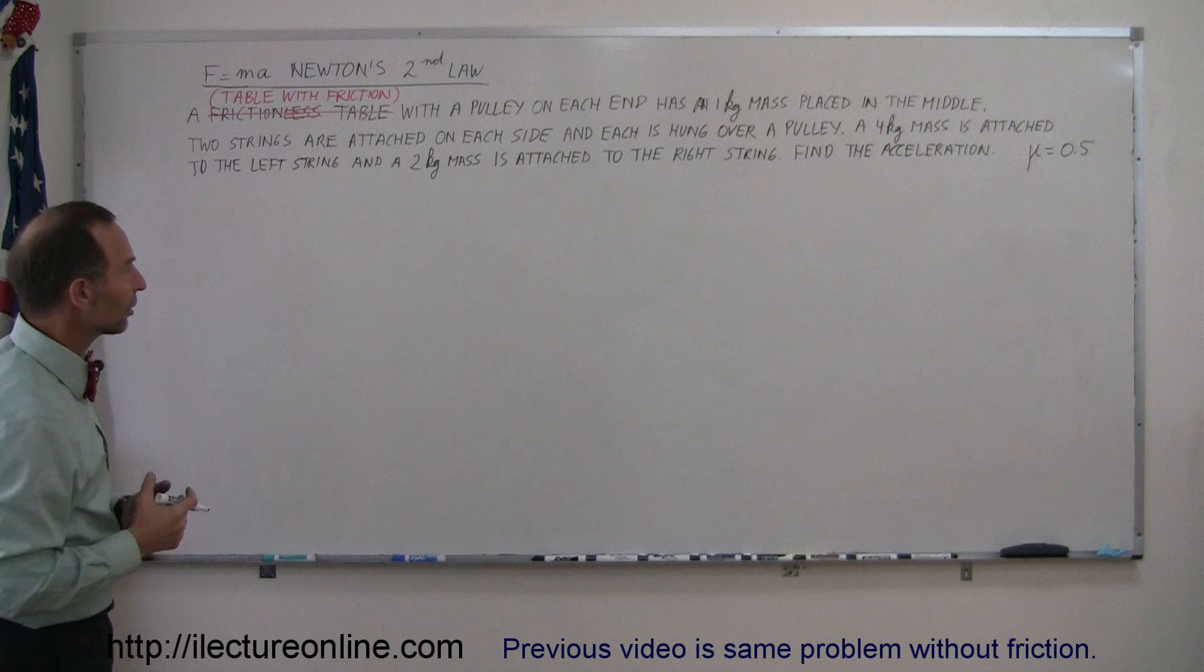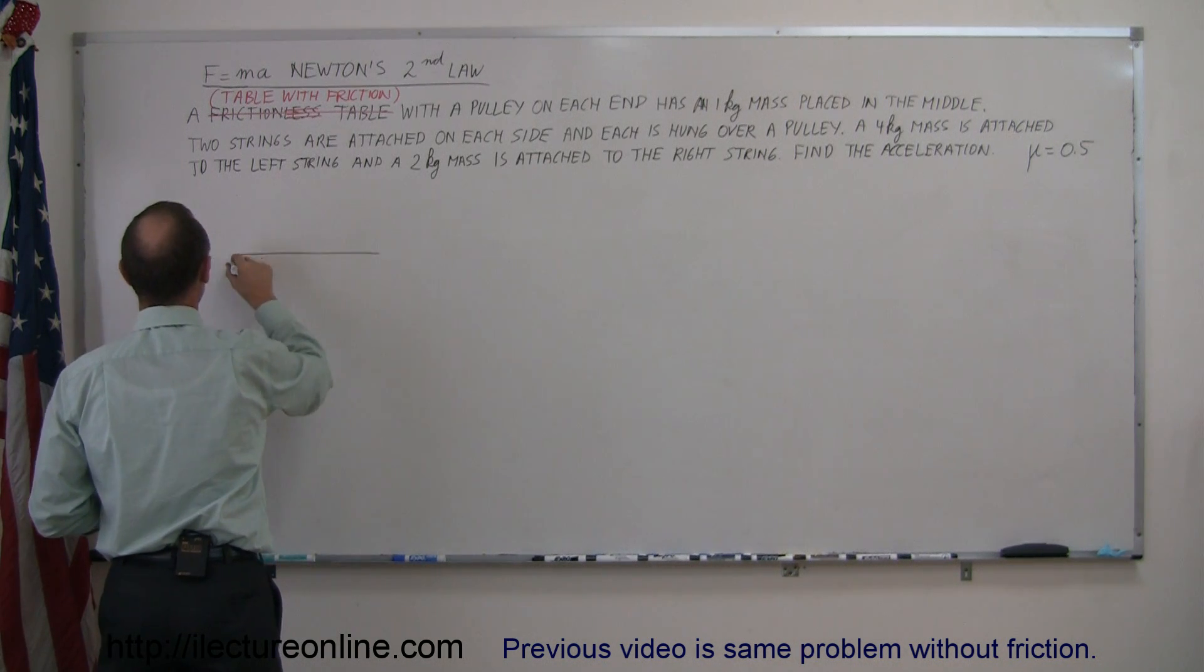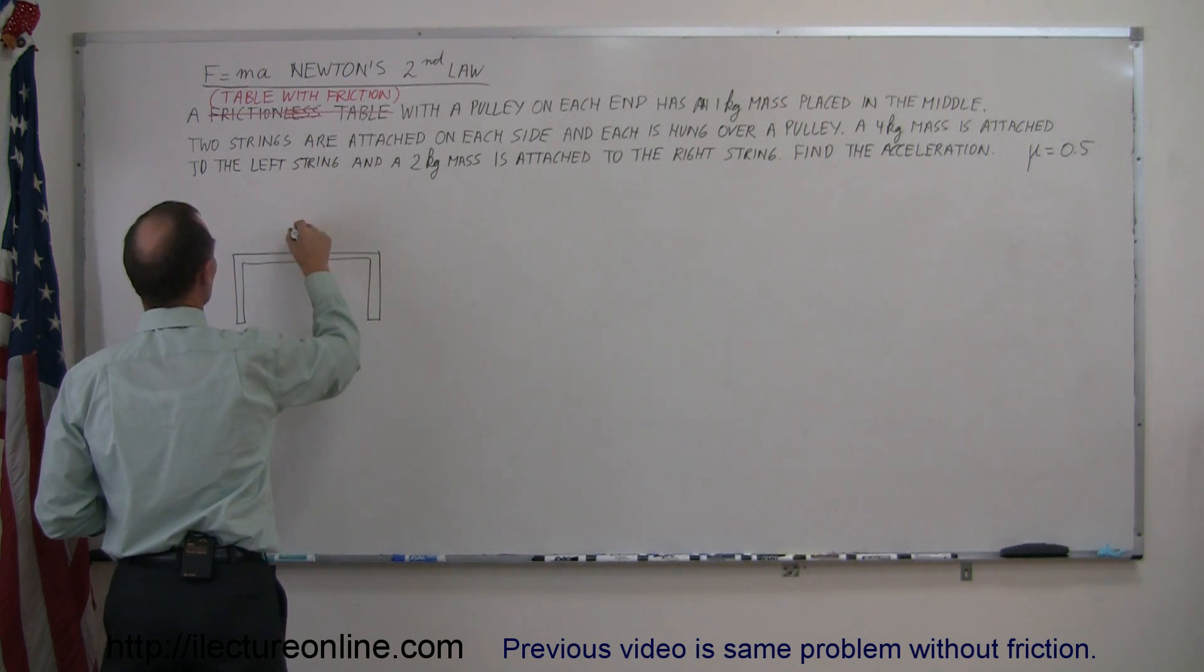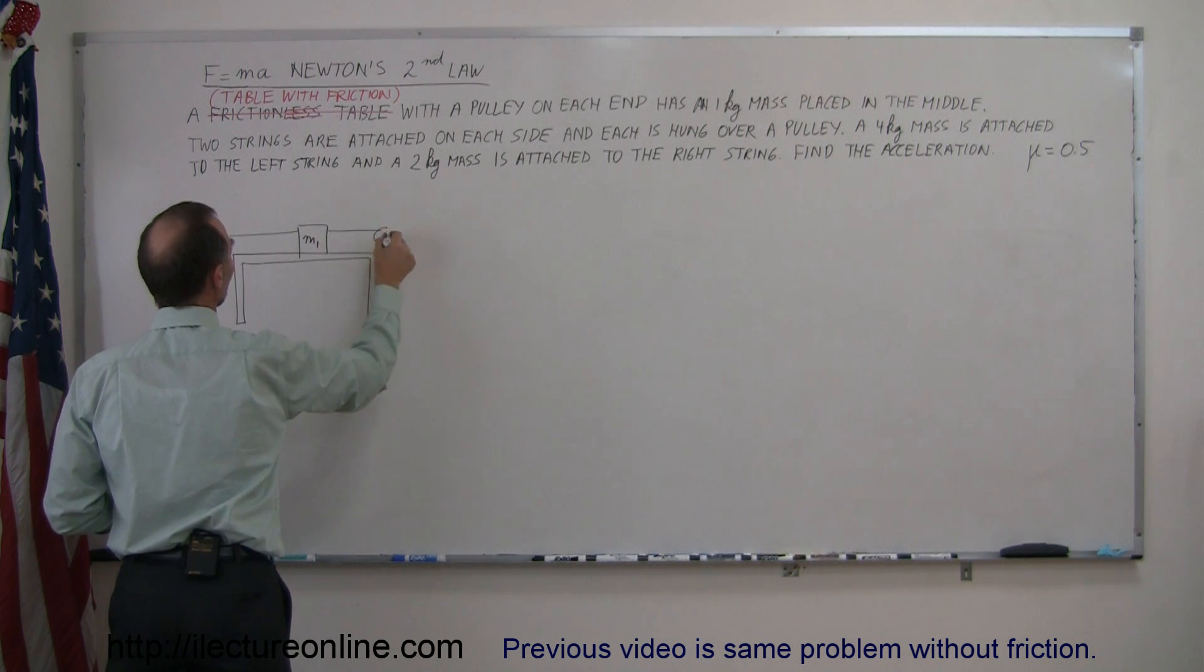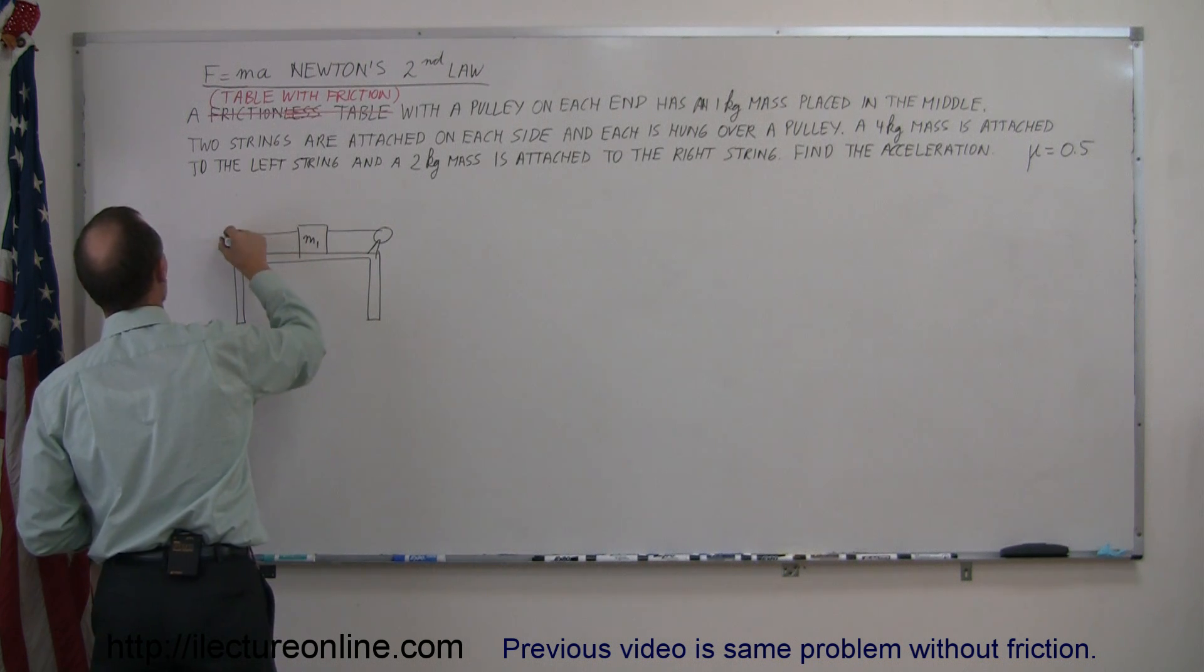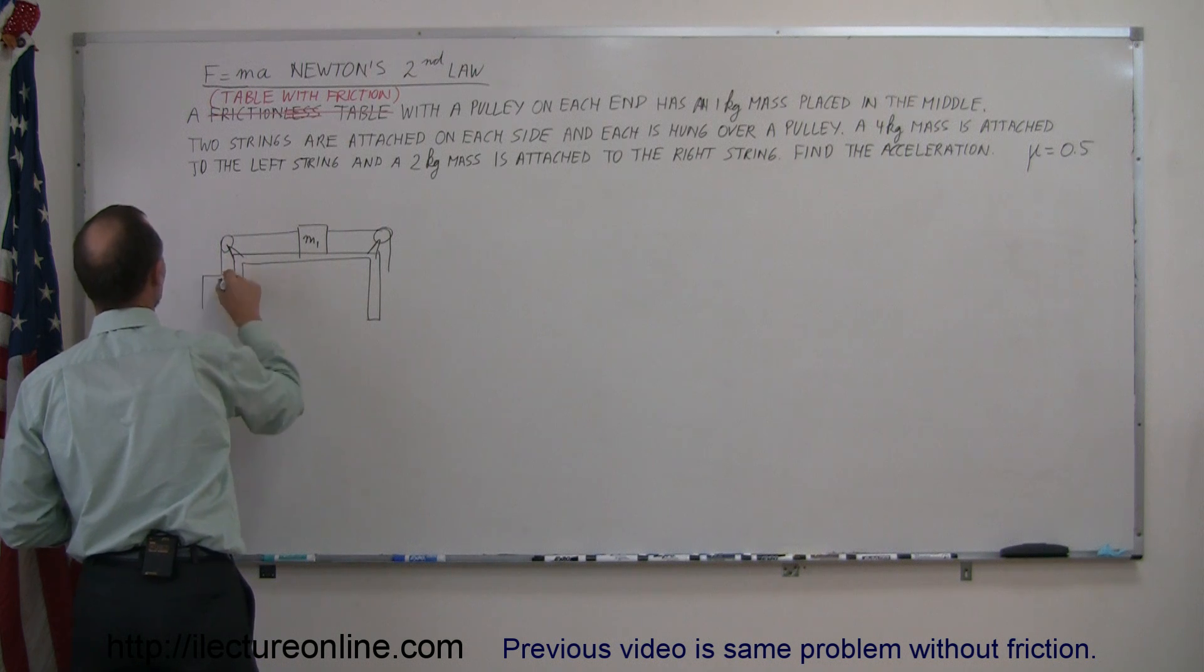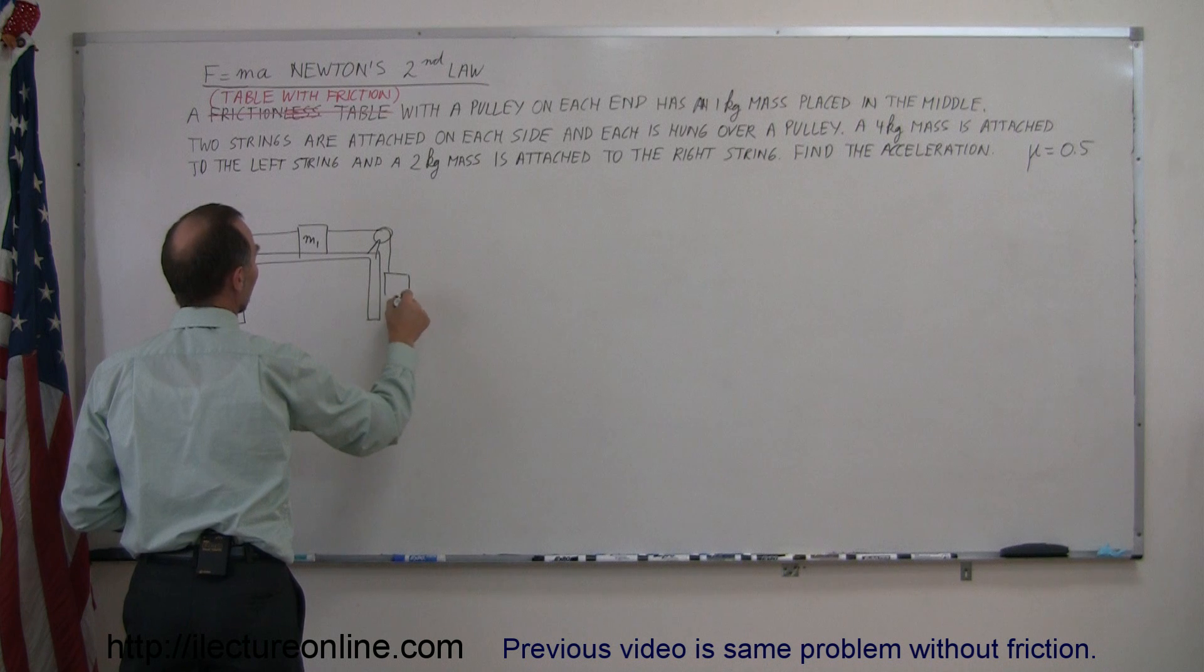To help us understand what this looks like, let's draw a diagram. Here we have a table. We place the one kilogram mass on the table, call this M1. Then we have strings attached on both sides with a pulley on each side. The string goes over the pulley. On the left side we have mass M2, and on the right side we have mass M3.